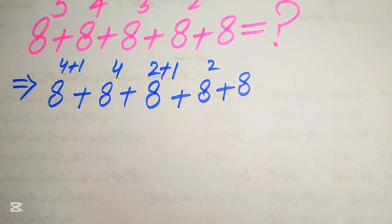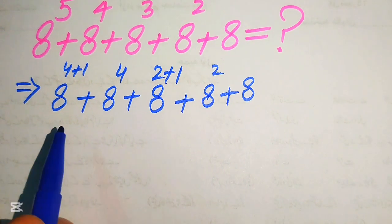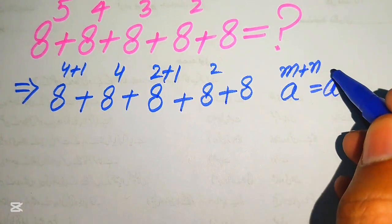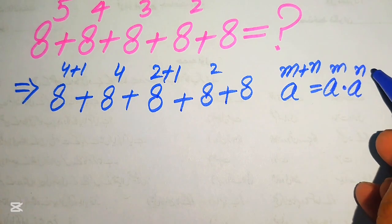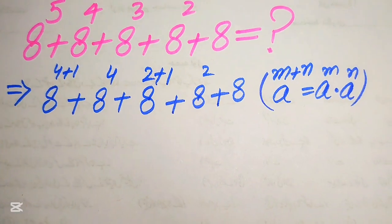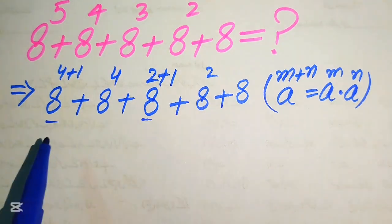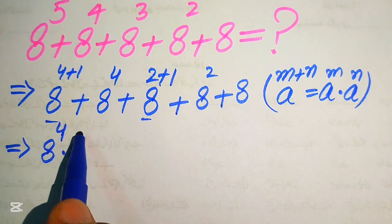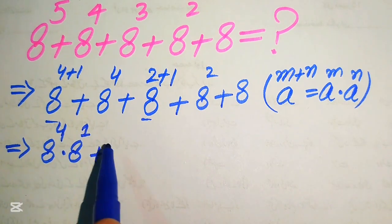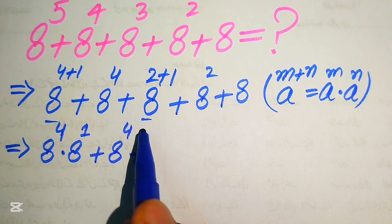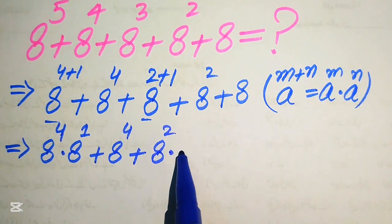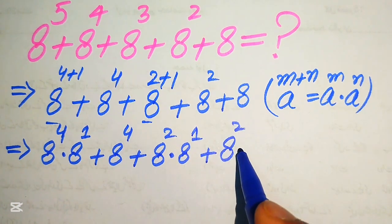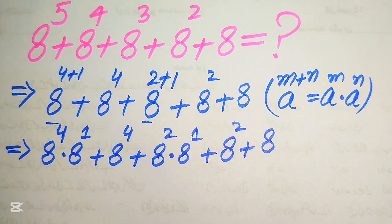Now we need to use the exponent law. According to this law, a to the power of m plus n equals a to the power of m multiplied by a to the power of n. Applying this law, we break these exponents and write: 8 to the power of 4 multiplied by 8 to the power of 1, plus 8 to the power of 4, plus 8 to the power of 2 multiplied by 8 to the power of 1, plus 8 squared, plus 8.